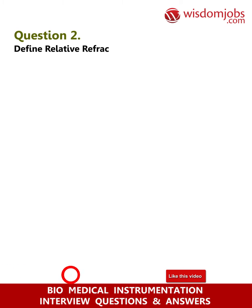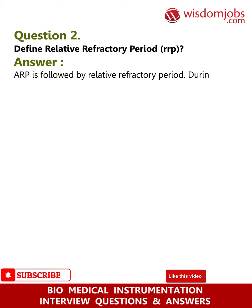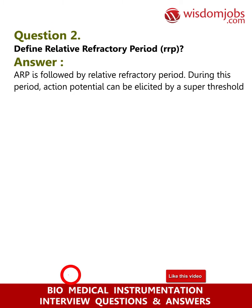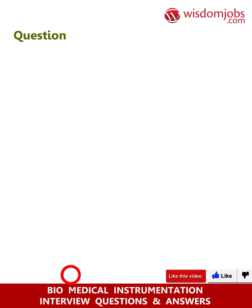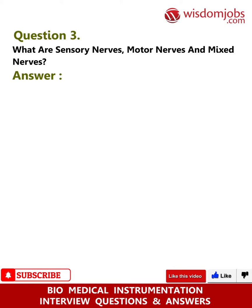Question 2: Define relative refractory period (RRP). Answer: ARP is followed by the relative refractory period. During this period, an action potential can be elicited by a suprathreshold stimulus.